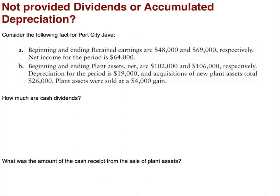Consider the following data. Letter A: the beginning and ending retained earnings are $48,000 and $68,000 respectively, and net income for the period is $64,000. Letter B: beginning and ending plant assets net are $102,000 and $106,000 respectively. Depreciation for the period is $19,000, acquisitions of new plant assets total $26,000, and plant assets were sold at a $4,000 gain. We need to figure out cash dividends and the cash receipt from the sale of plant assets.